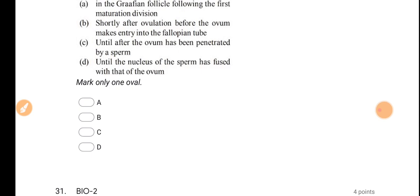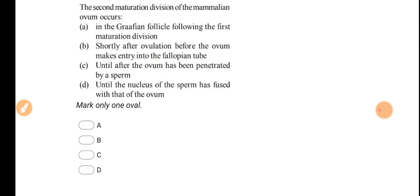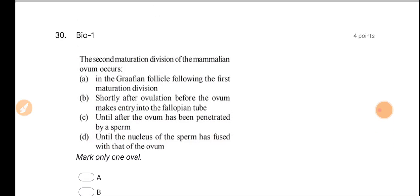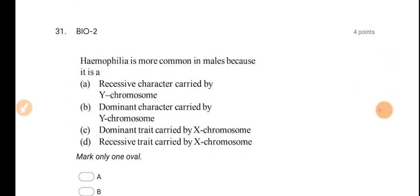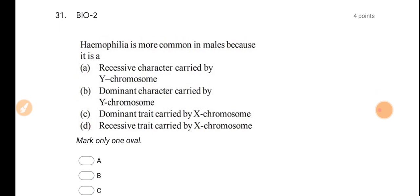So now you know the answer. One more thing: the first meiotic division is also called reductional division, as you may have read in the cell cycle. And the second meiotic division is also called equational division. Now come to the second question.